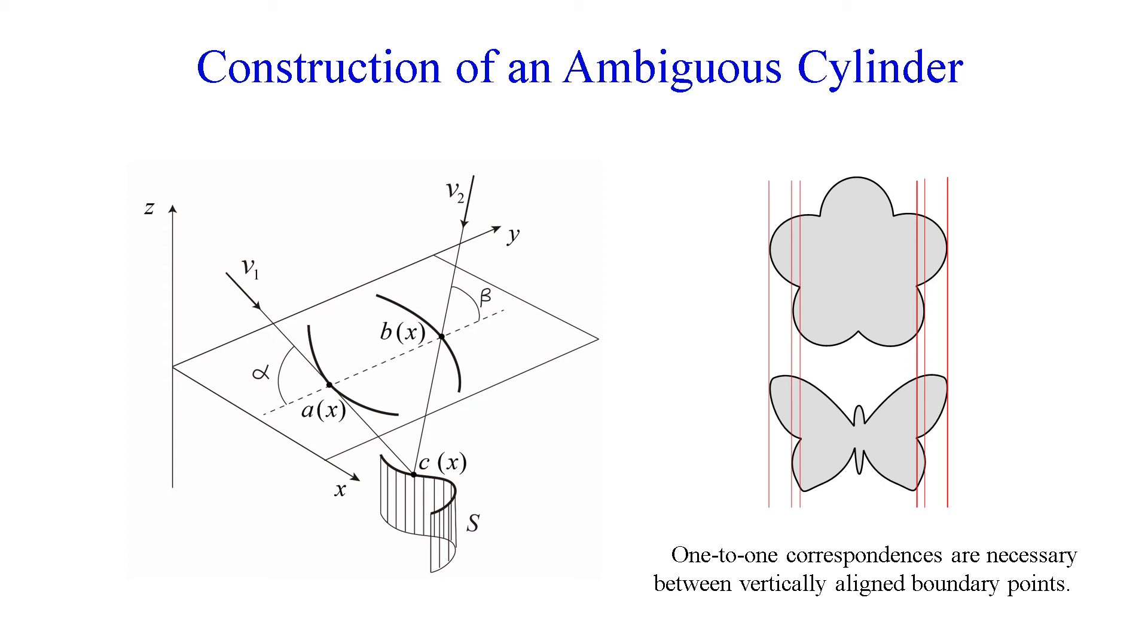So we can make an ambiguous cylinder if we can decompose the boundaries of the two given shapes to x-monotone curves in such a way that they have one-to-one correspondence.